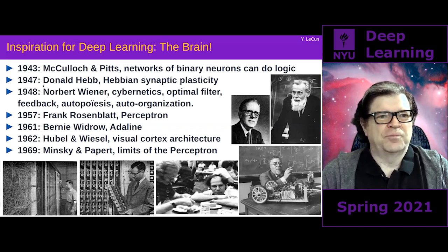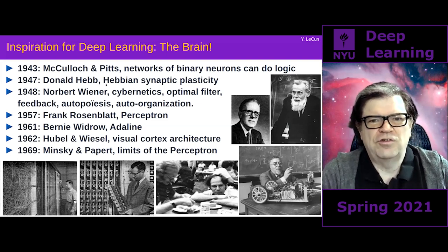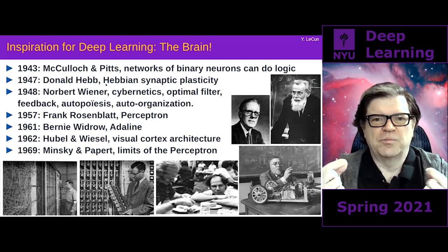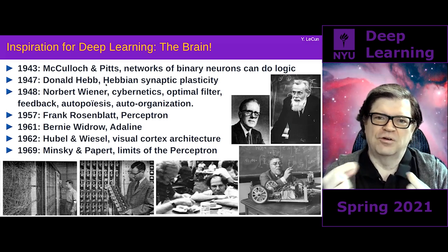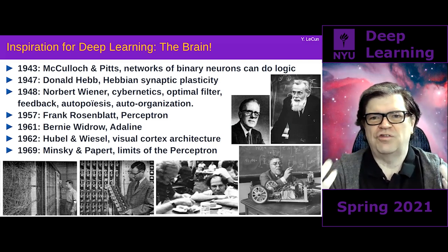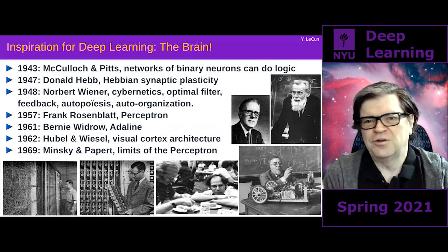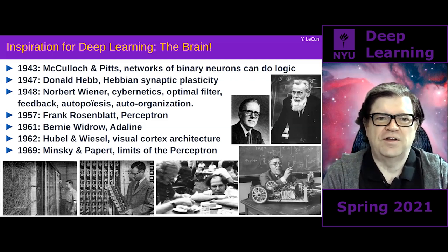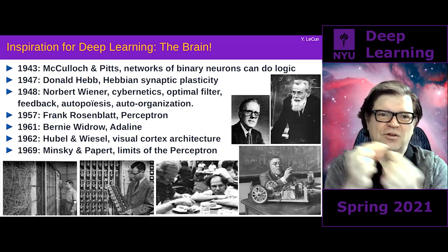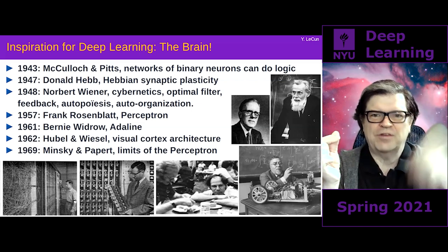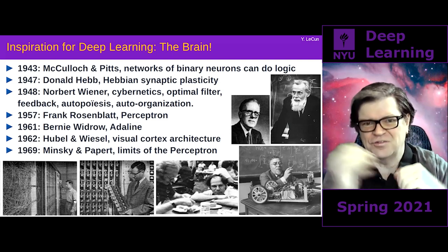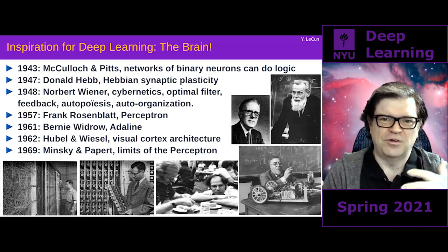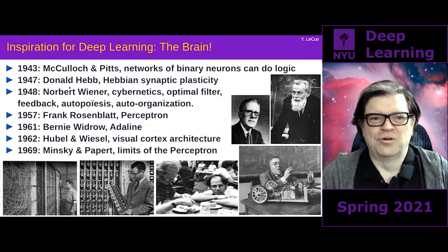Simultaneously, Donald Hebb, who was a psychologist, came up with a proposal for how neurons in the brain, by changing the strengths of connections between neurons, can change their function. Learning proceeds by changing the strength of connections between neurons. Hebb proposed that if two neurons are active at the same time, the synapse connecting them strengthens; if they're not active at the same time, it gets depressed. This is called Hebbian learning, and it was reused in early artificial neural network models.